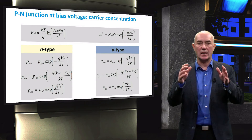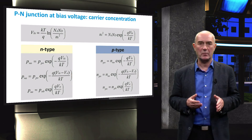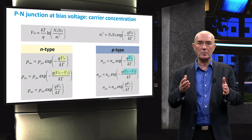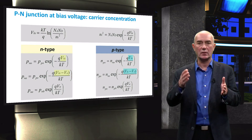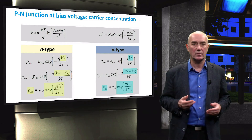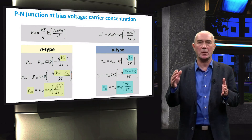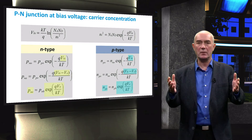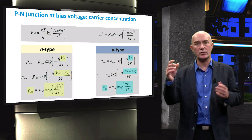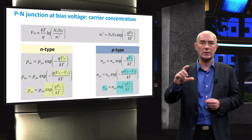When a P-N junction is under forward bias, we can replace the built-in voltage in the equation by a new potential difference across the depletion region — the built-in voltage lowered by the applied voltage. Looking at the equations for minority carrier concentration, we notice it is proportional to the exponent of the applied voltage. Therefore, under forward bias, the minority carrier concentration at the edge of the depletion region is higher and depends on the magnitude of the applied external voltage.